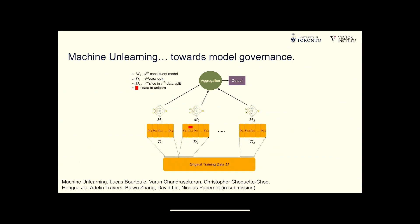Another aspect of test-time trustworthiness is model governance — we don't pay enough attention to what happens to models once deployed. With new legislation like the GDPR promoting the right to be forgotten, users may request their data be deleted. Rather than discarding all models trained on that data, we've been exploring ways to shard and slice datasets and save intermediate model states during training. When someone requests their data be unlearned at test time, we can revert the model to an earlier state and continue training from there — saving significant computation. We call this machine unlearning.